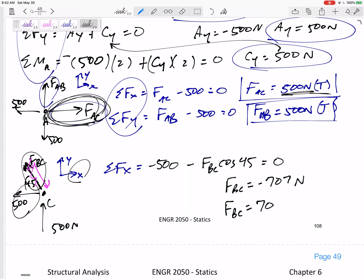FBC is 707 newtons compression. If you always guess tension, then when your answer comes out negative, it means compression.